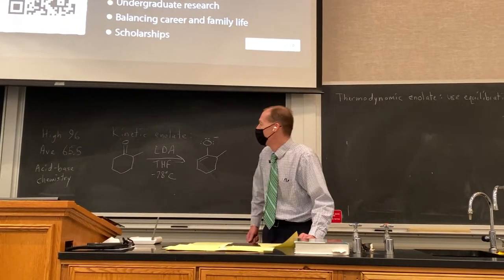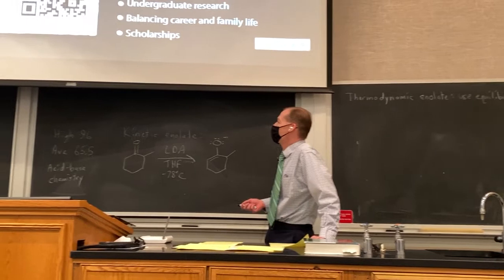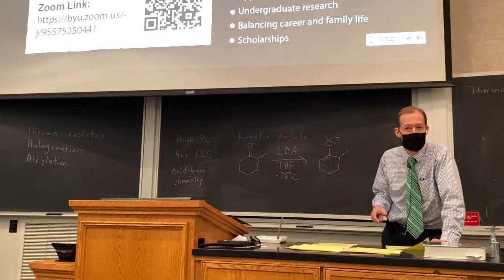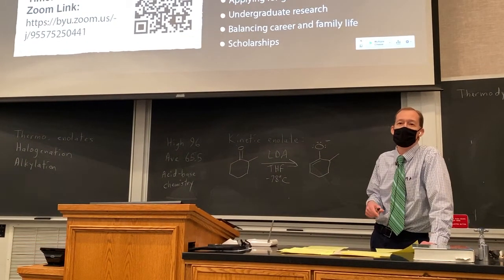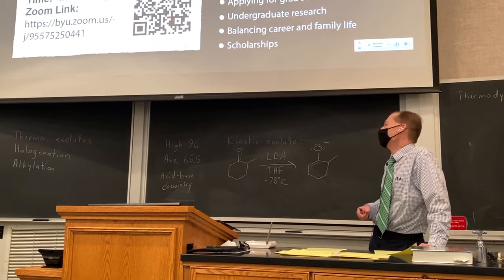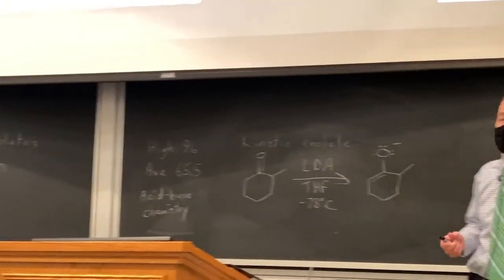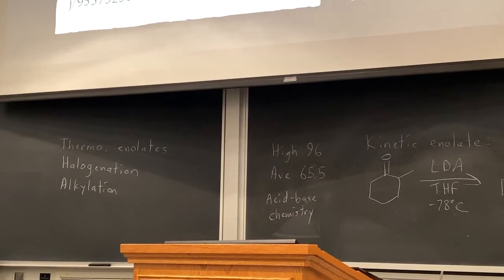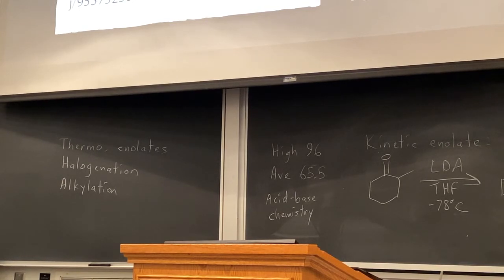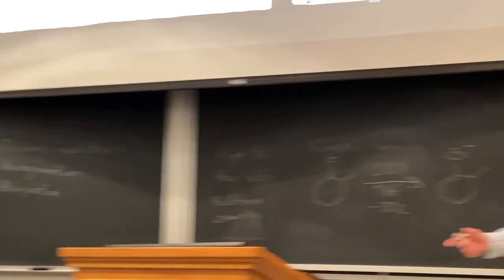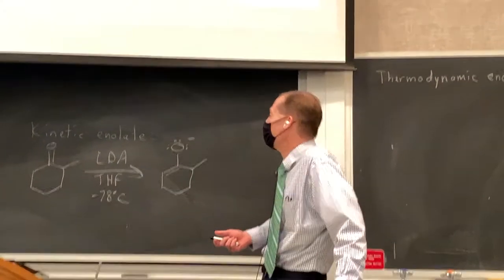Today we're going to discuss how to make thermodynamic enolates. We discussed kinetic enolates on Monday, and then we're going to get into reactions of enolates, focusing on the halogenation and the alkylation reactions. We won't quite finish chapter 23 — we'll spend about half the time on chapter 23 on Friday and then half the time starting chapter 24.